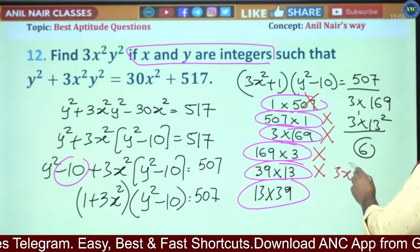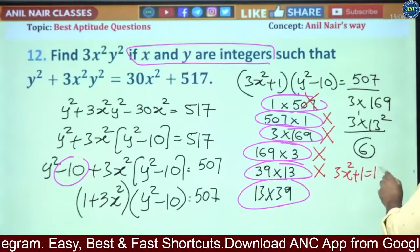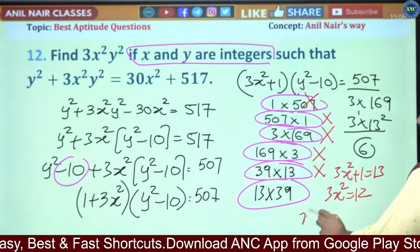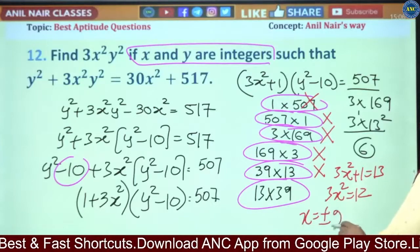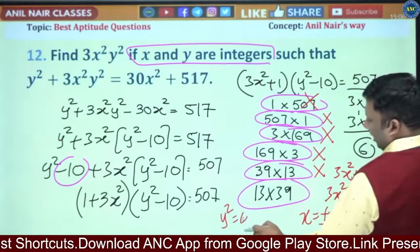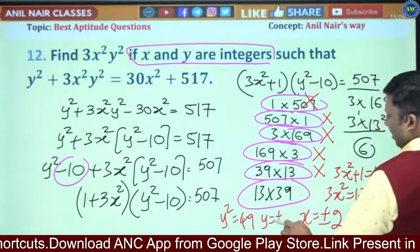So 3x² + 1 = 39, 3x² = 12, x² = 4. x will be ±2. y² will be 49. y will be ±7.